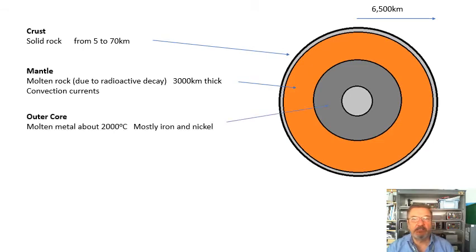Next is the outer core. There's the outer core and the inner core. The outer core is molten metal, mostly iron and nickel, and again that is sloshing around. Molten metal at about 2,000 degrees centigrade.